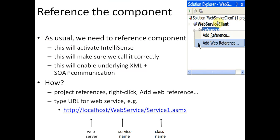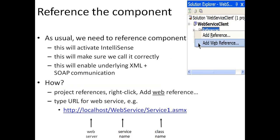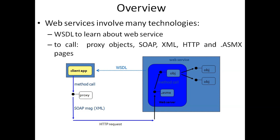As usual, we need a reference to the component. When executing the program, we right-click on References and select Add Web Reference. We type the URL for the web service — Service1 — and it gets added to the program. This object window shows the added web service, and this is how we set up and run the web services.